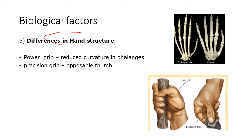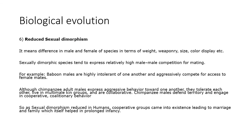In hand structure, humans have reduced curvature of the finger bones (phalanges), unlike apes who have curved phalanges for grasping branches. This led to a power grip and a precision grip made possible by the opposable thumb, which animals lack. These grips enabled tool-making — the power grip for striking a hammerstone, and the precision grip for holding objects finely.